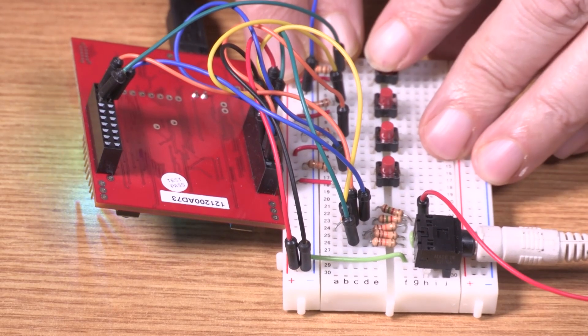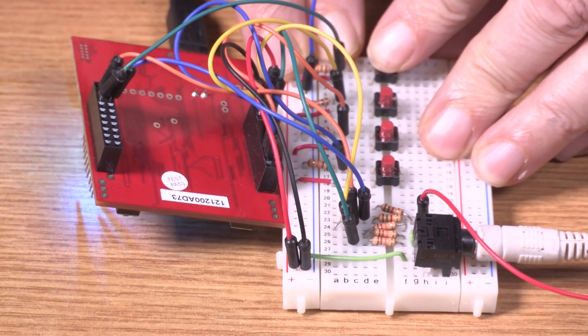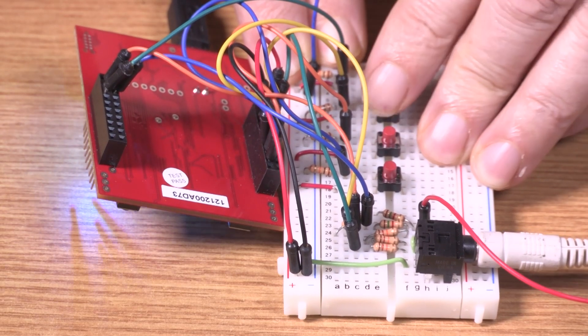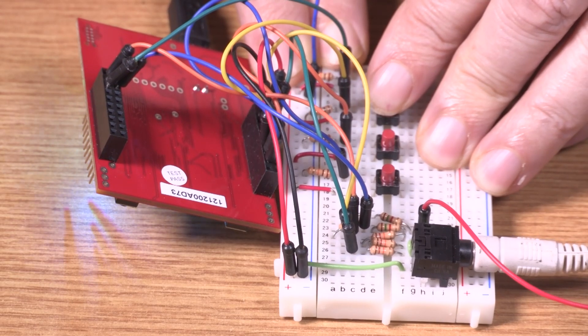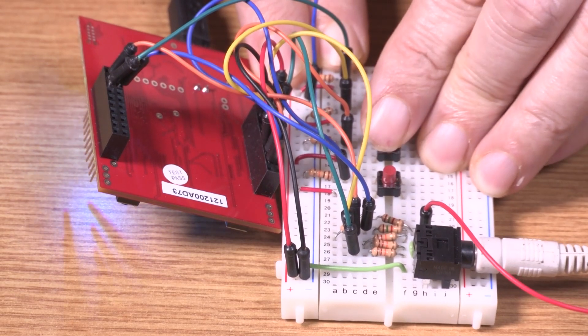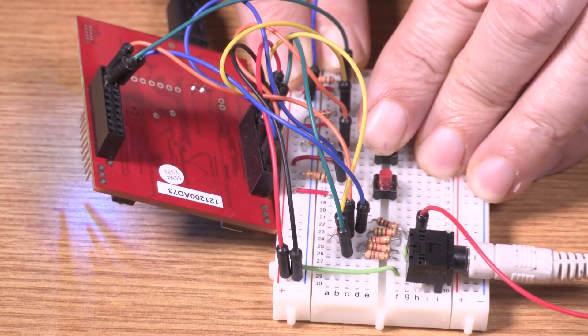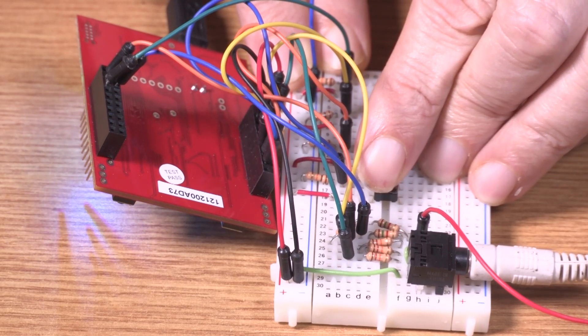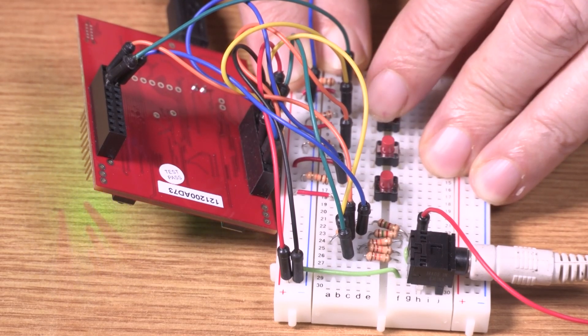Every time you push a button, it's supposed to generate a sine wave of that frequency. This one is 523 Hz. This one is a little bit higher, 587 Hz. This one is 660 Hz. The last one here is going to be about 784 Hz. And so what we have is a piano.